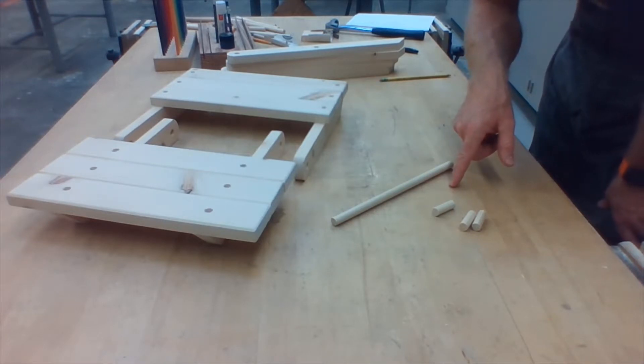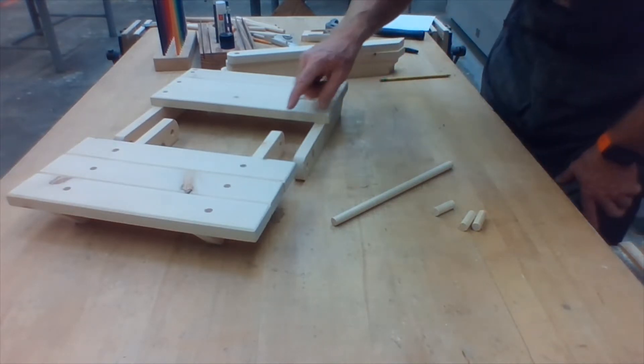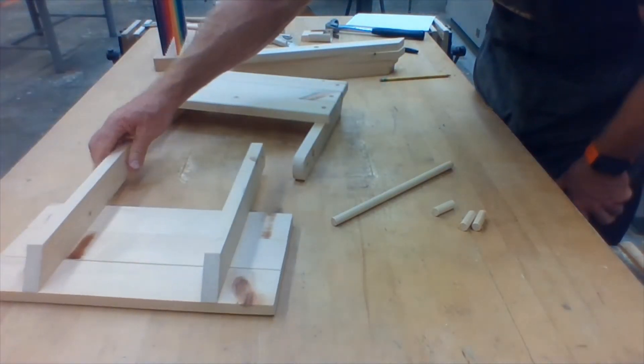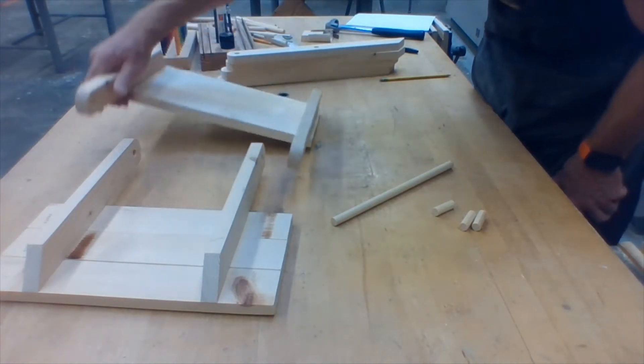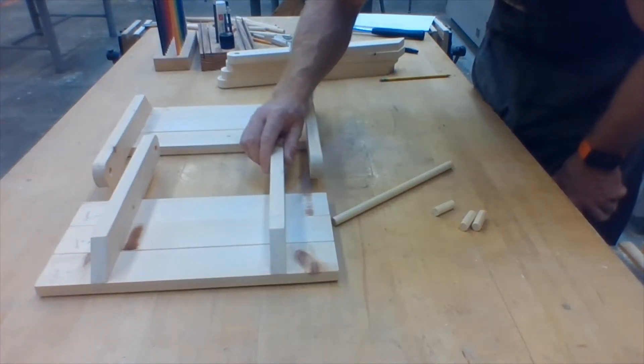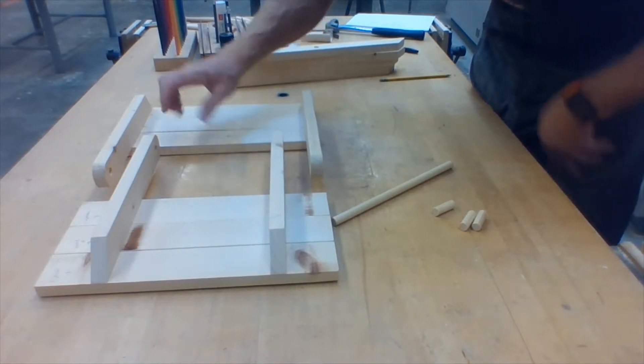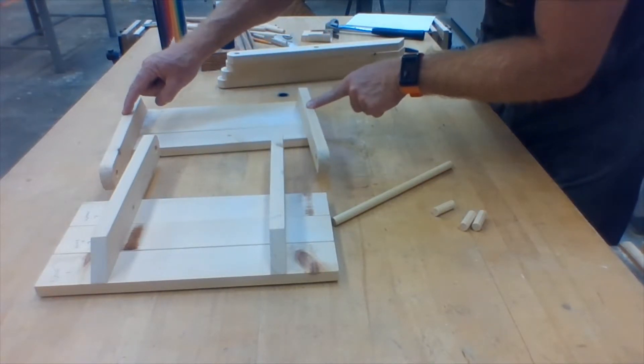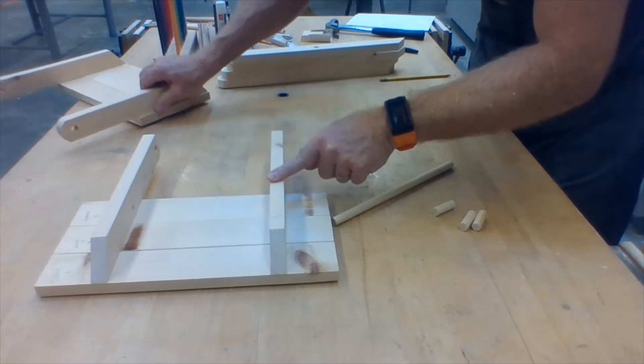Now that you have your dowels cut and sanded, you're ready to assemble. Notice that on the two halves of the seat for the stool, two of the seat supports are narrow and two of the seat supports are wide. We're going to begin with the narrow piece.